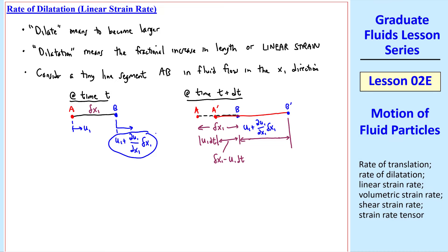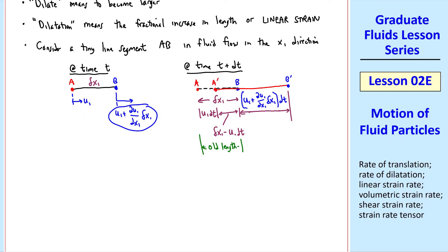This distance would be the speed of B times dt, which would be u1 plus del u1 del x1 delta x1, that's this speed, the whole thing times dt. This is the old length at time t, and this is the new length from A prime to B prime at t plus delta t.